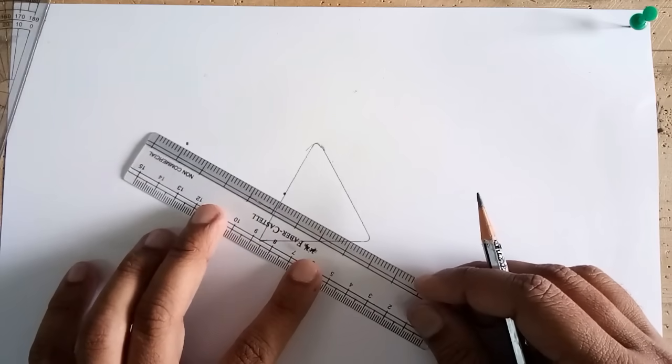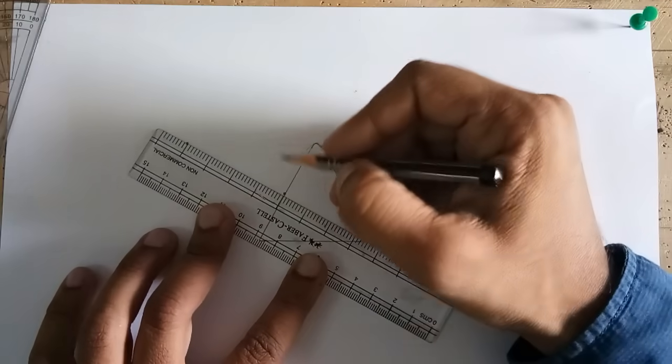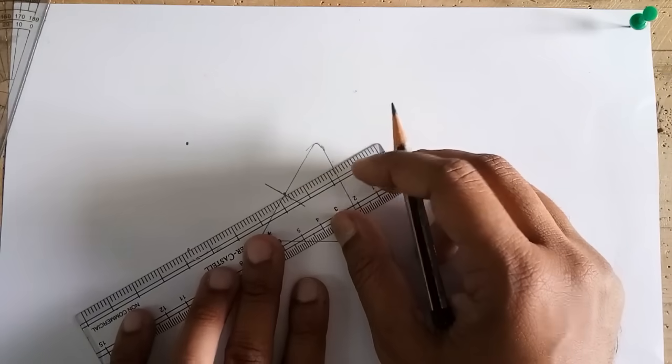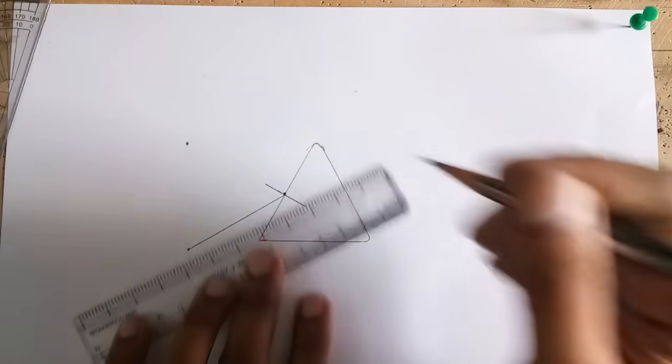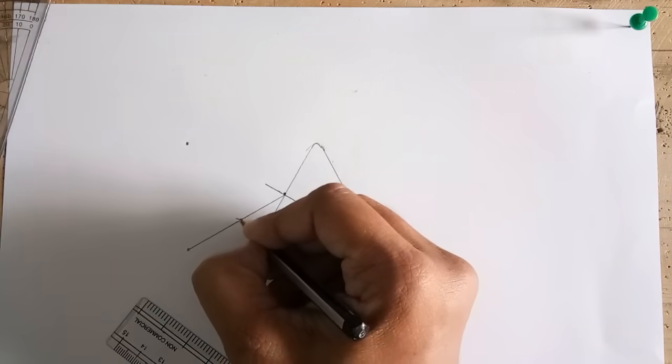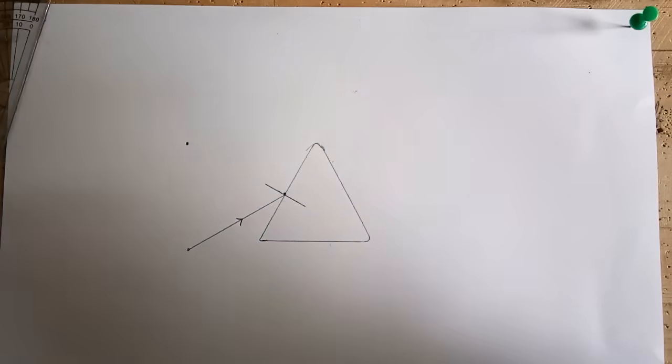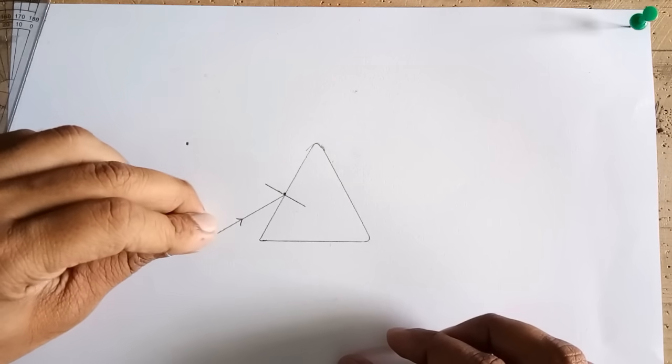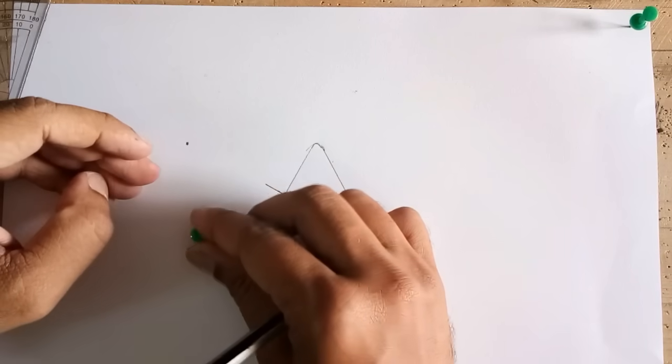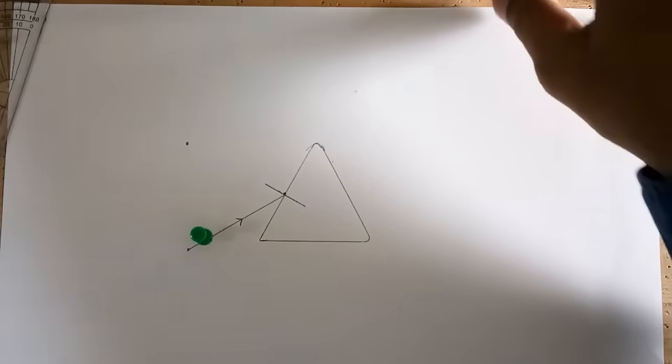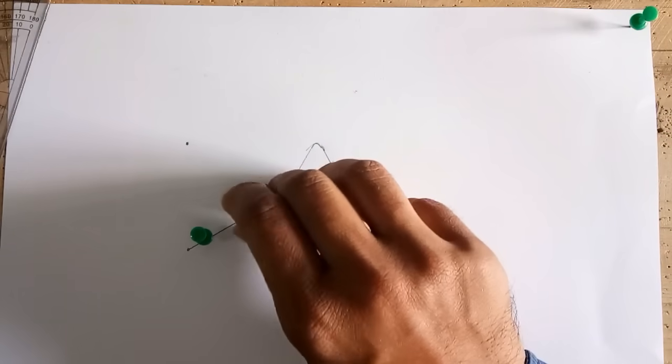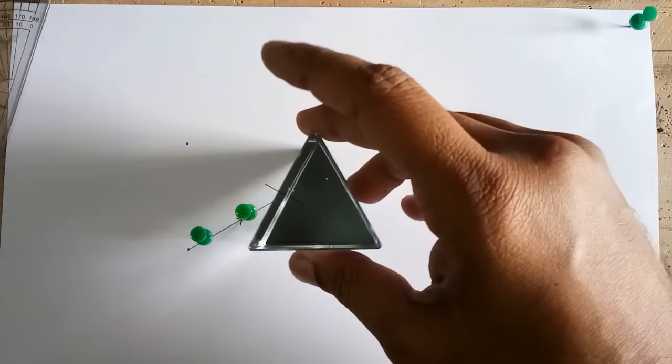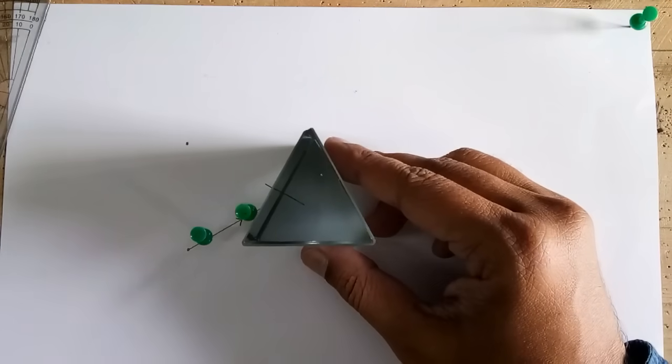Now this would be your normal and this would be the angle of incidence. Now two pins you are supposed to fix it over here on the incident ray. Now put the prism back over here at its marked position.